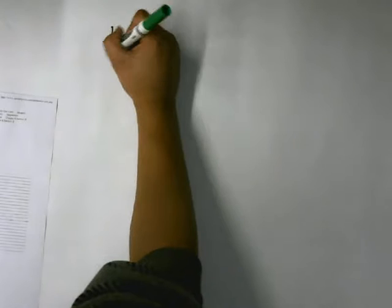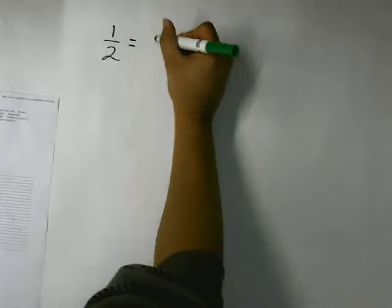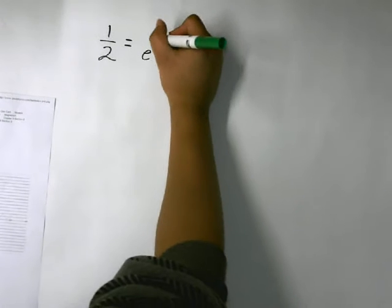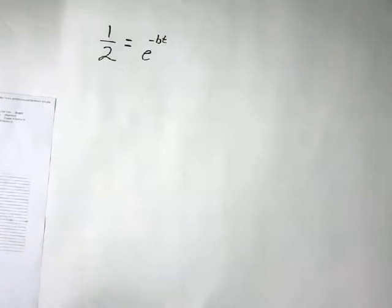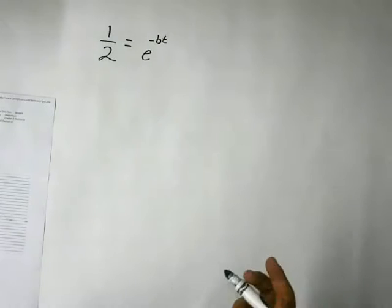It's going to be one half, because that is the extent, how far it's decayed, is equal to e to the negative bt, where b is equal to the decay constant and t is equal to time.